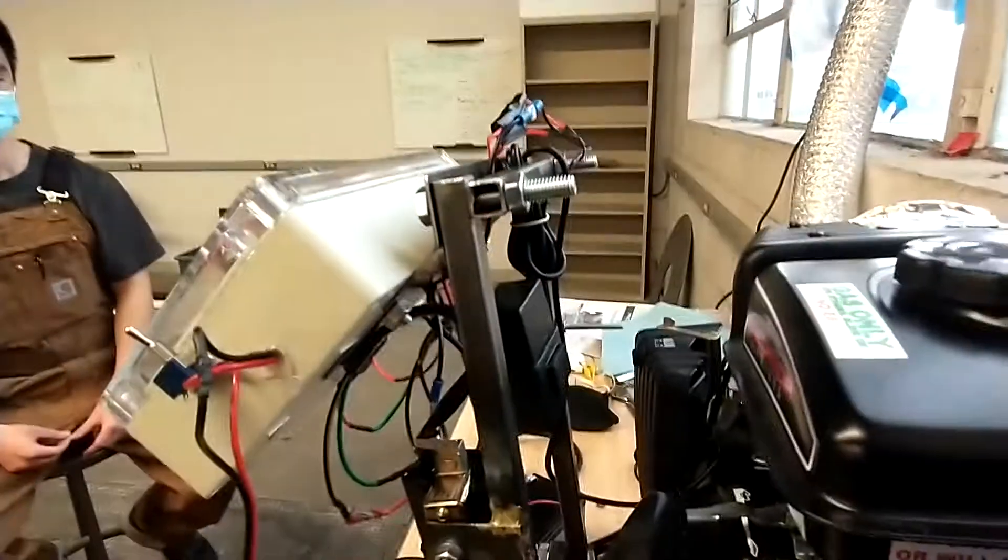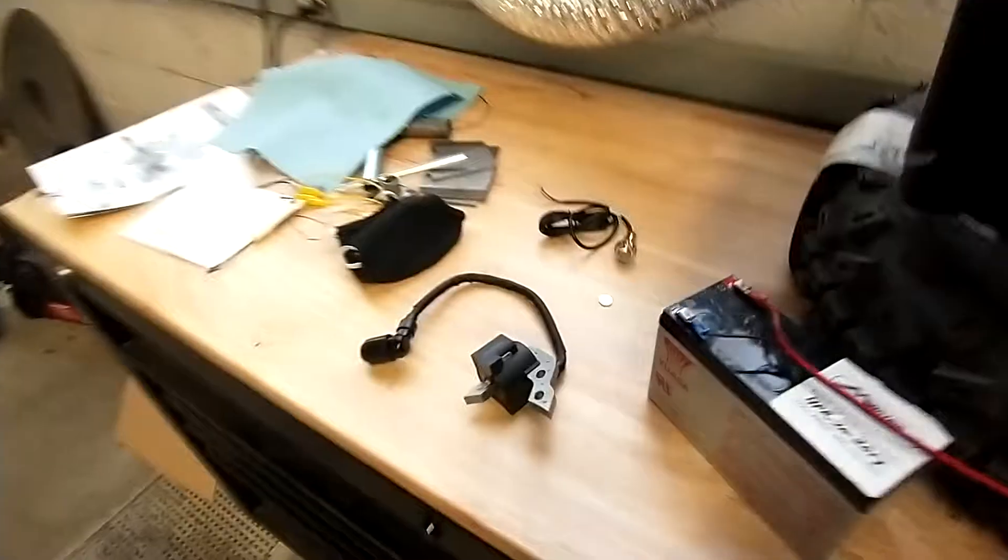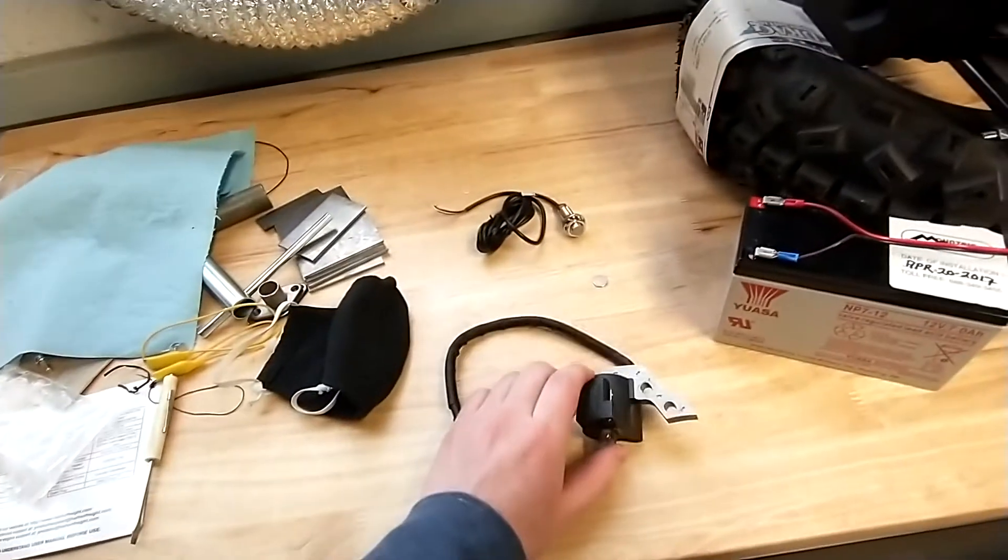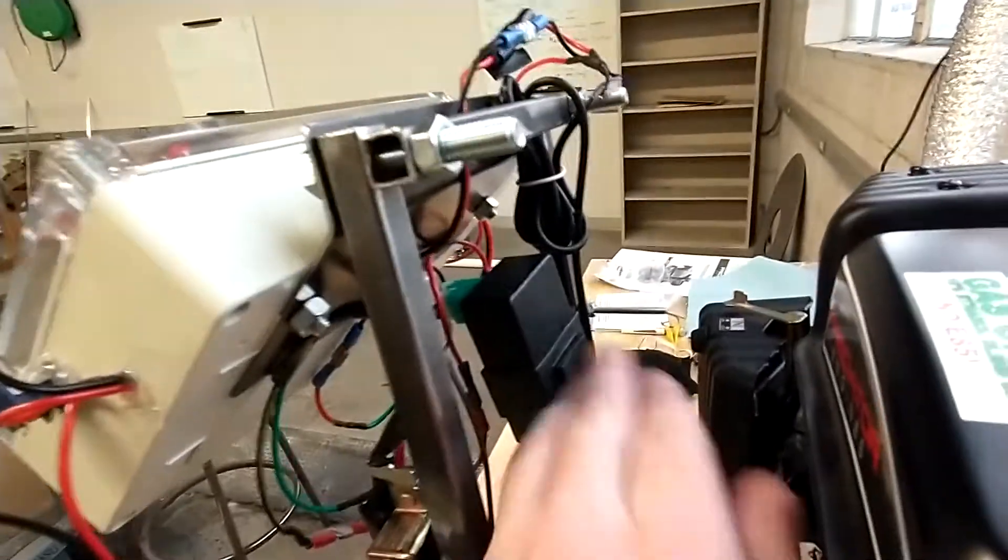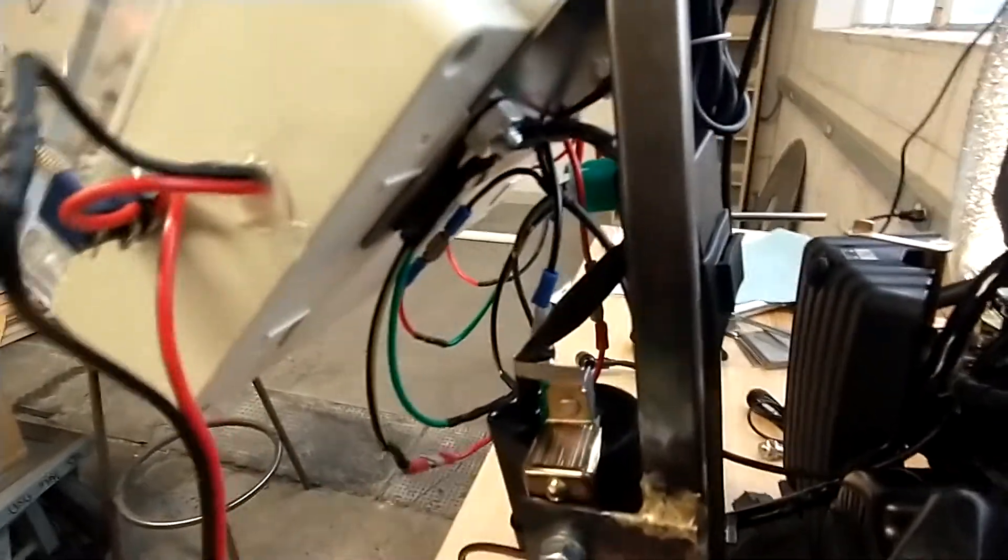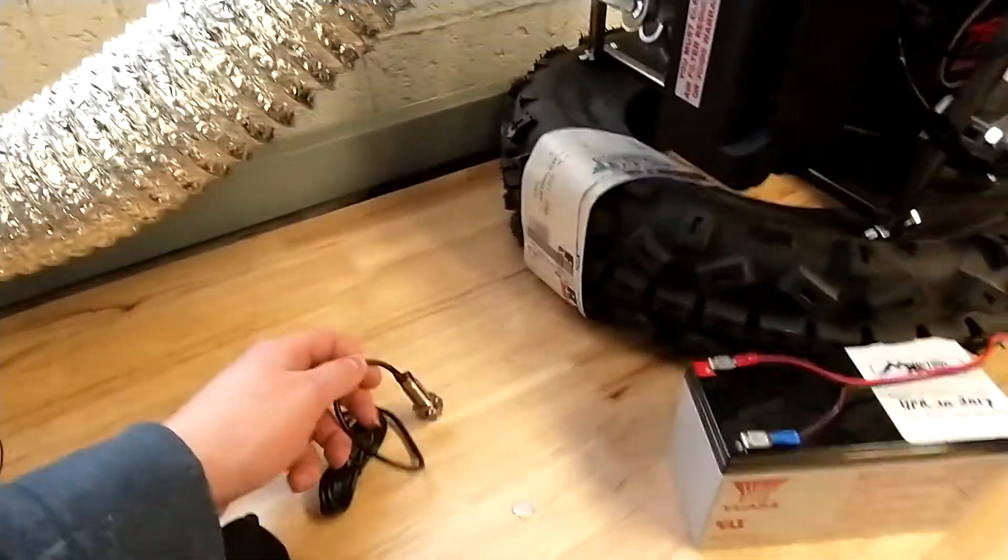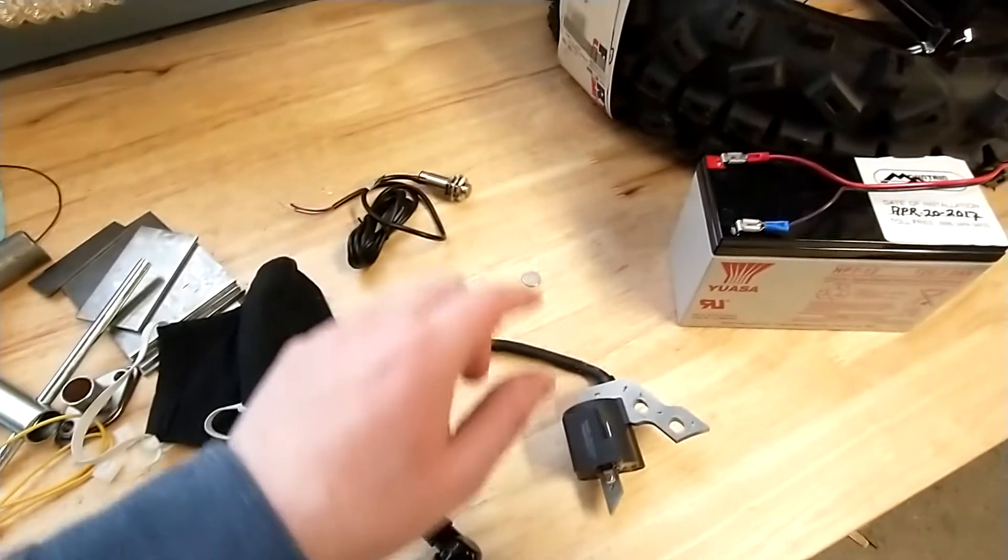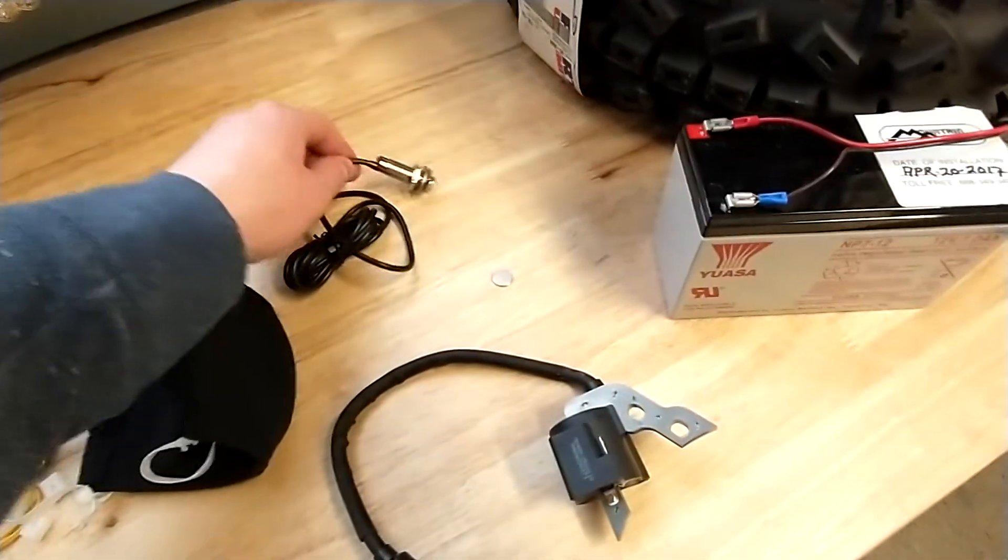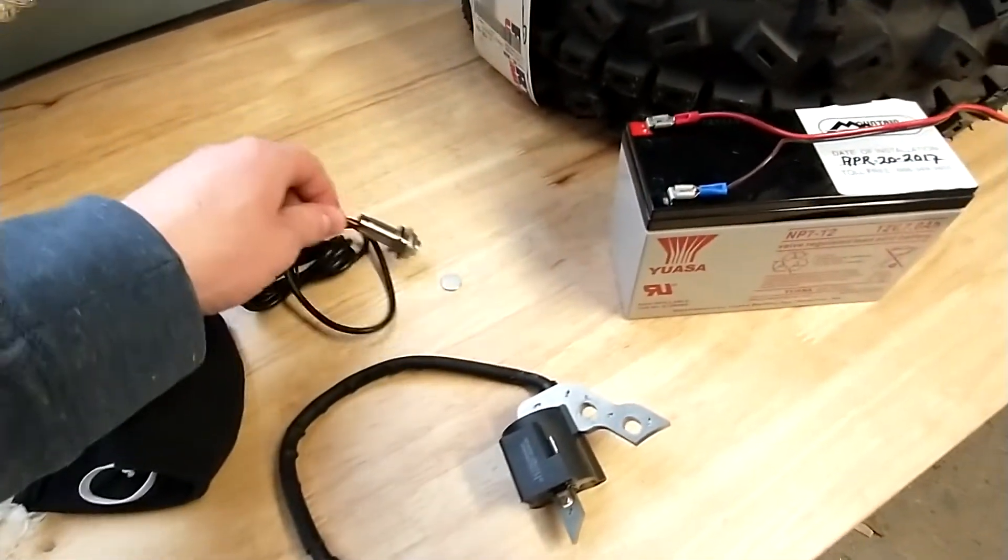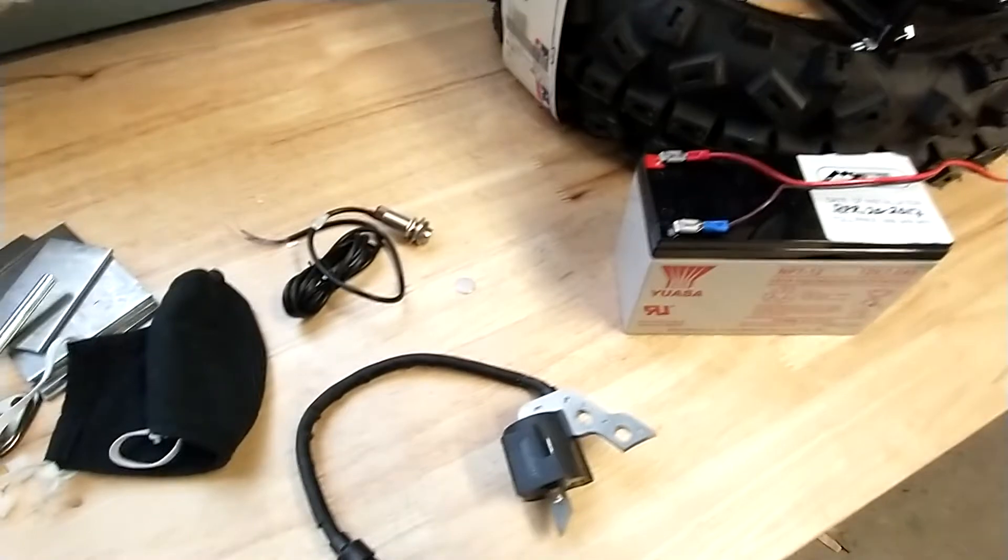I replaced the original magneto with a DC CDI box here and the ignition coil here. It takes a signal from the Hall Effect sensor. As the magnet passes over the Hall Effect sensor it generates two pulses.